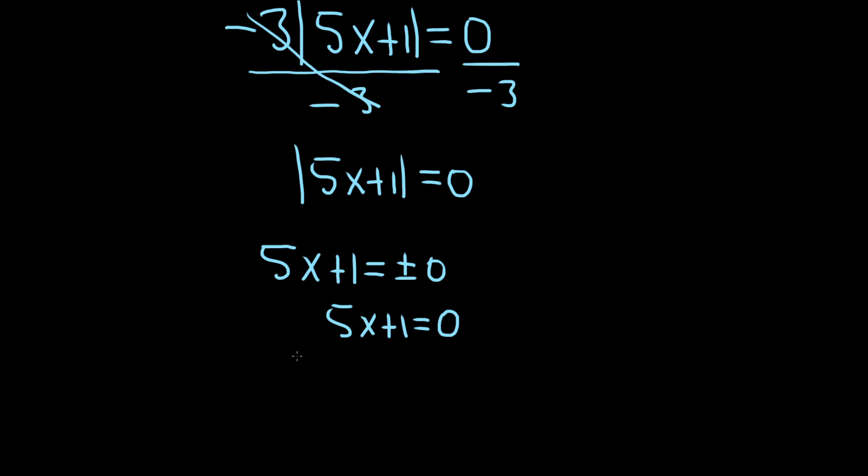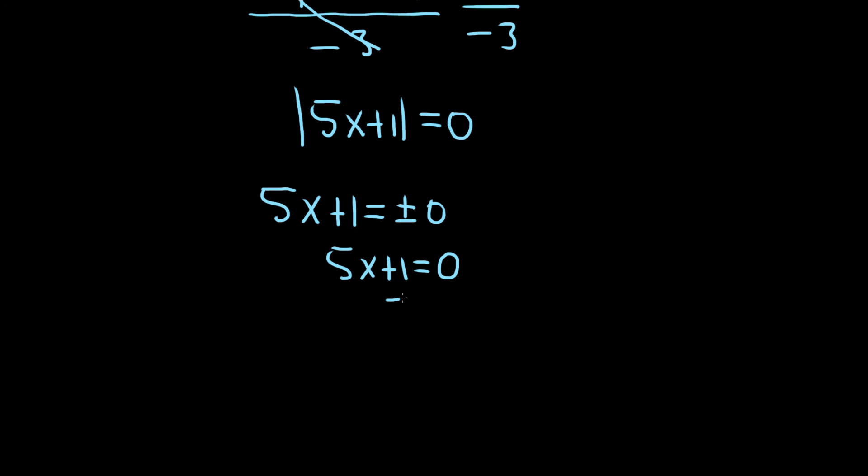To keep solving this, we now just have to isolate the x. We'll subtract 1 from both sides. Minus 1, minus 1. So we have 5x equals minus 1.